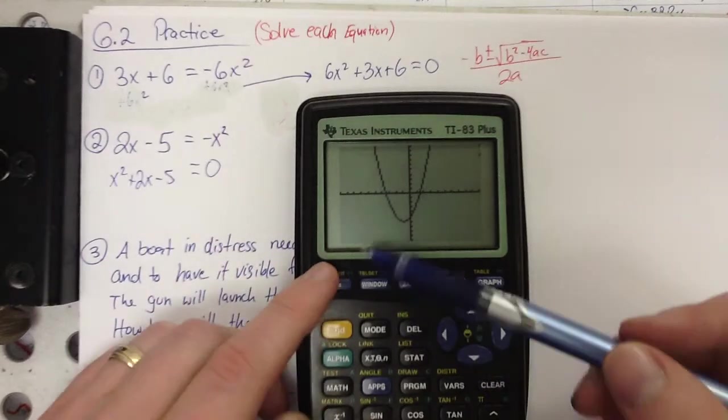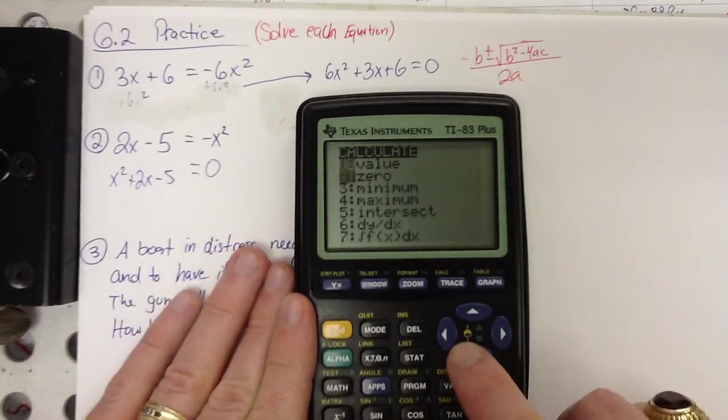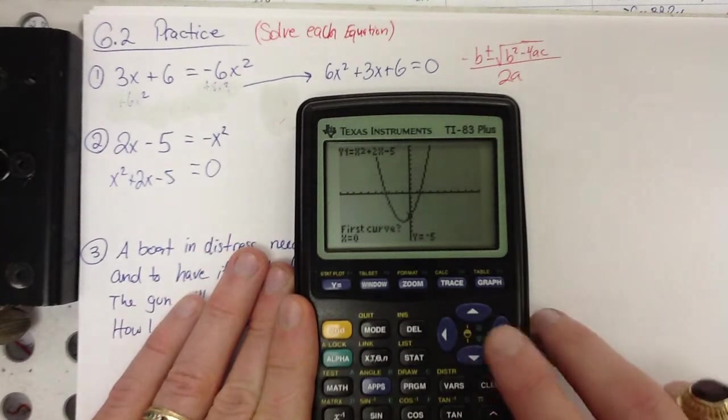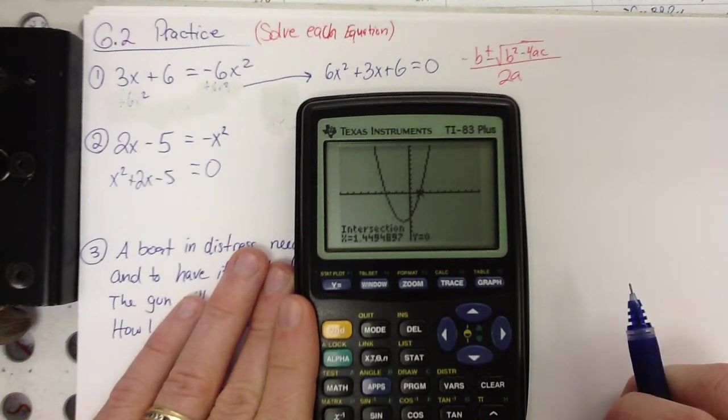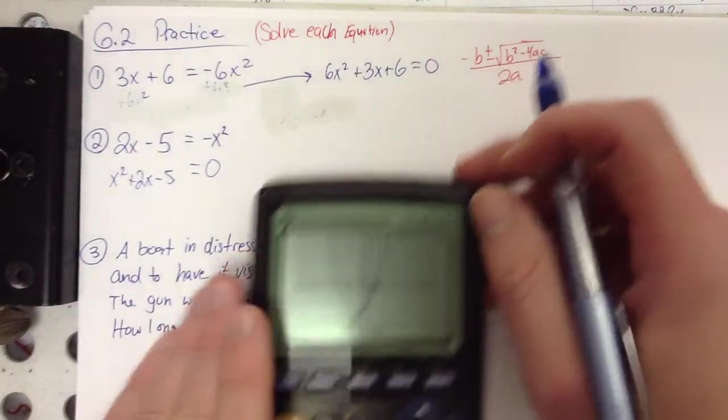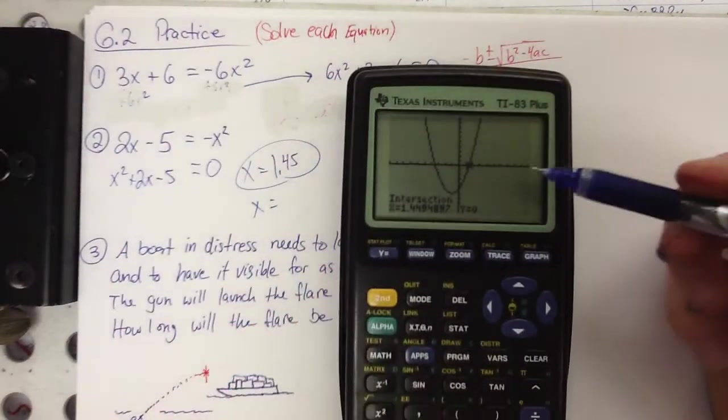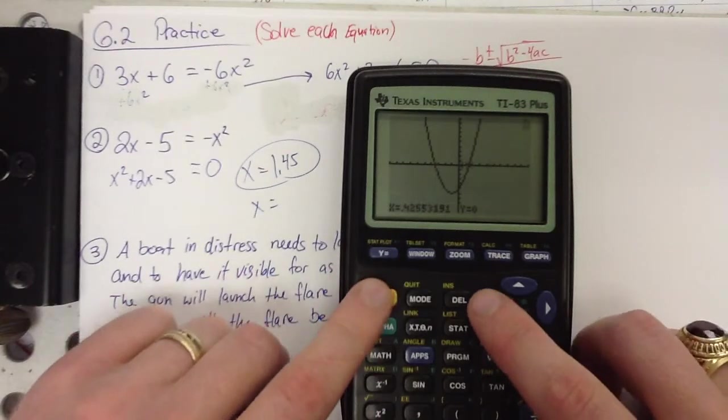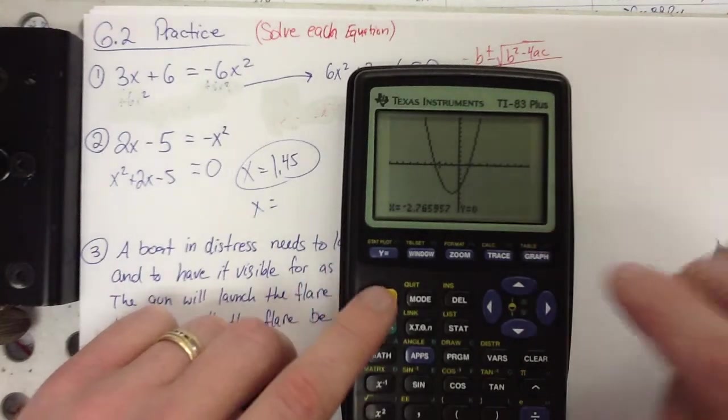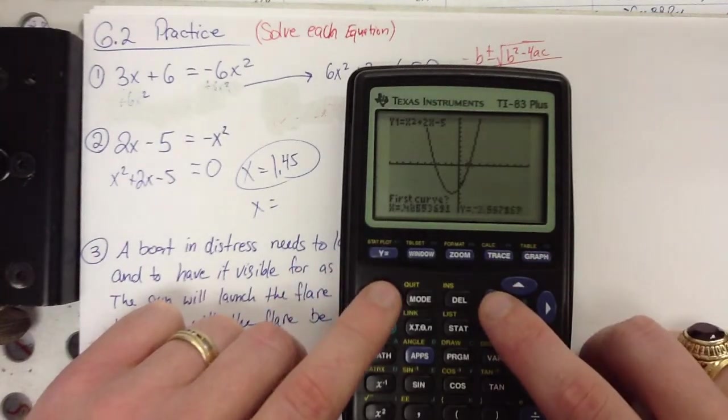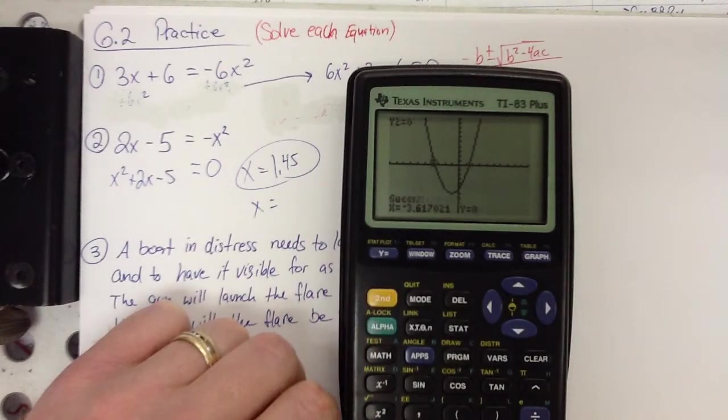This one does have two solutions. Remember to keep y2 equal to 0. So when you do second trace, go down to intersect. All you got to do is get the x pretty close to where they cross, enter three times, and you're going to get your answer. 1.45. That's one of them. We know there's a second one back here. So remember, second and over, you can move that x a little faster. There we go.